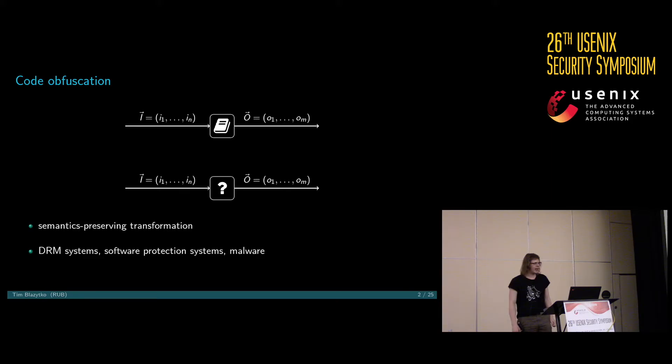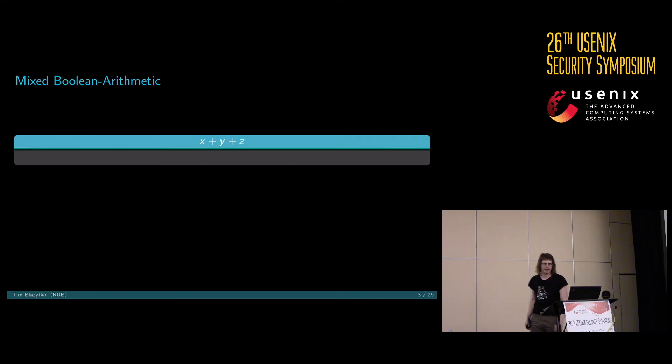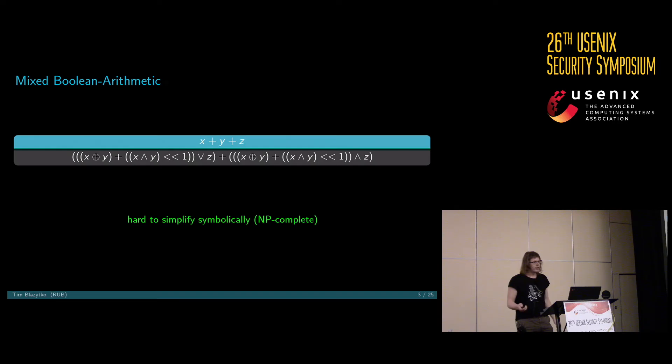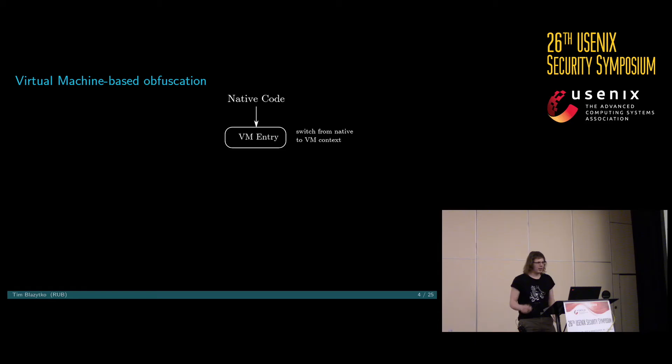These kinds of schemes are used, for instance, in DRM systems, in software protection systems, or in malware. To give you an example, that is called mixed Boolean arithmetic. Basically, we have a simple addition: X plus Y plus Z. This is easy if you see that in code. But the obfuscated form isn't easy to read — we can prove it is semantically equivalent to the expression above. In general, these expressions are hard to simplify symbolically; this problem is somehow NP-complete.